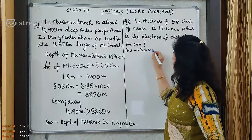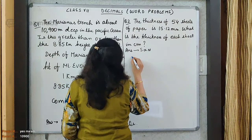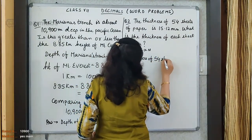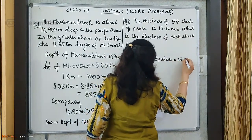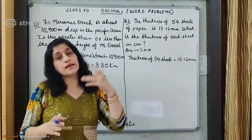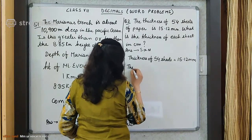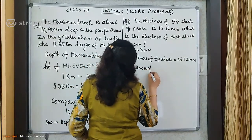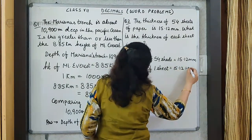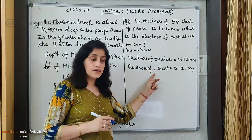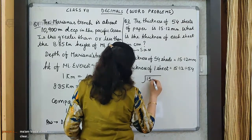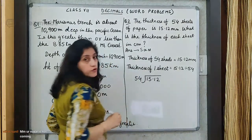Solution — let's begin. What is given? Thickness of 54 sheets is equal to 15.12 millimeter. You see here the thickness is given in millimeter. So first we will find the answer in millimeter and then convert it to centimeter. Thickness of one sheet is equal to 15.12 divided by 54. You know, where it is given for many and we have to find for one, we have to divide.